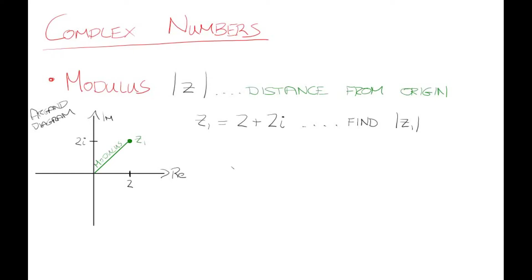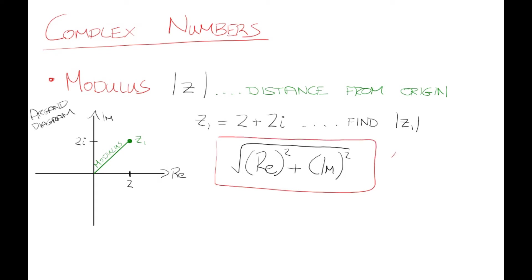The formula will always work, but the important thing to remember is: do not include the i's in this formula. So it's the square root of the real part squared plus the imaginary part squared, but very importantly, do not include i. If you include i, it will mess this shortcut up for you.